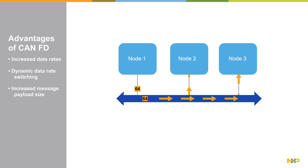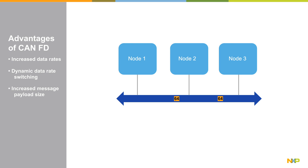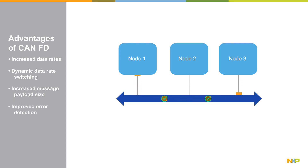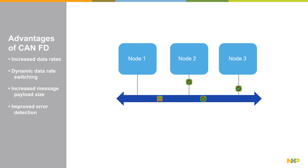Second, message payload size is increased to 64 bytes in CANFD compared to only 8 in classic CAN, leading thus to improved bus efficiency when sending large amounts of data. CANFD also has improved error detection capabilities through increased performance in its cycle redundancy check algorithm, lowering the risk of undetected errors.